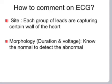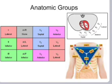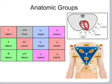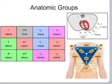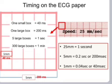How to comment on an ECG: each group of leads captures a certain wall of the heart. You assess morphology, duration, and voltage, and you must know the normal to detect the abnormal. Anatomic groups: Lead I and AVL are lateral; Leads II, III, and AVF are inferior; AVR is none; V1 and V2 are septal; V3 and V4 are anterior; V5 and V6 are lateral.